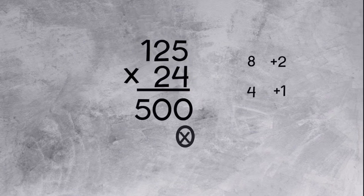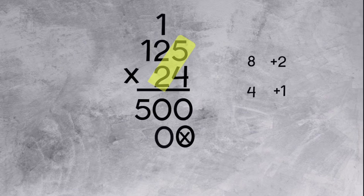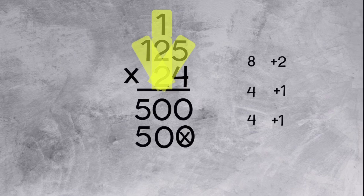Now we need our placeholder since we're multiplying by the 2, which is in the tens place. Let's repeat the process. 2 times 5 equals 10. Carry the 1 and bring down the 0. 2 times 2 is 4 plus the 1 on the top makes 5. Let's multiply 2 times 1. 2 times 1 equals 2.